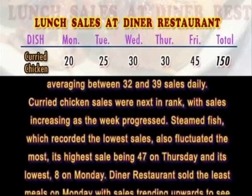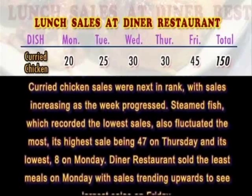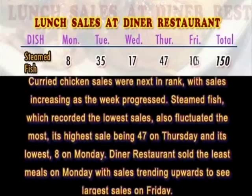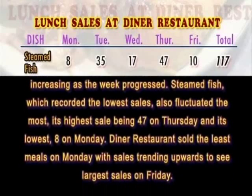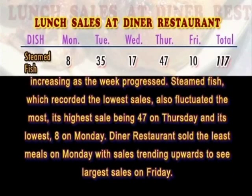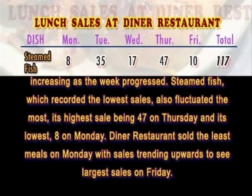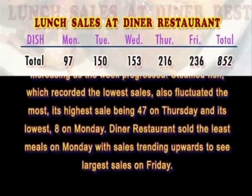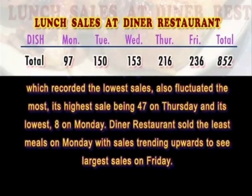Cold chicken sales were next in rank, with sales increasing as the week progressed. Steamed fish, which recorded the lowest sales, also fluctuated the most — its highest sale being 37 on Thursday, and its lowest, 8 on Monday. Dino Restaurants sold the least meals on Monday, with sales trending upwards to see the largest sales on Friday.